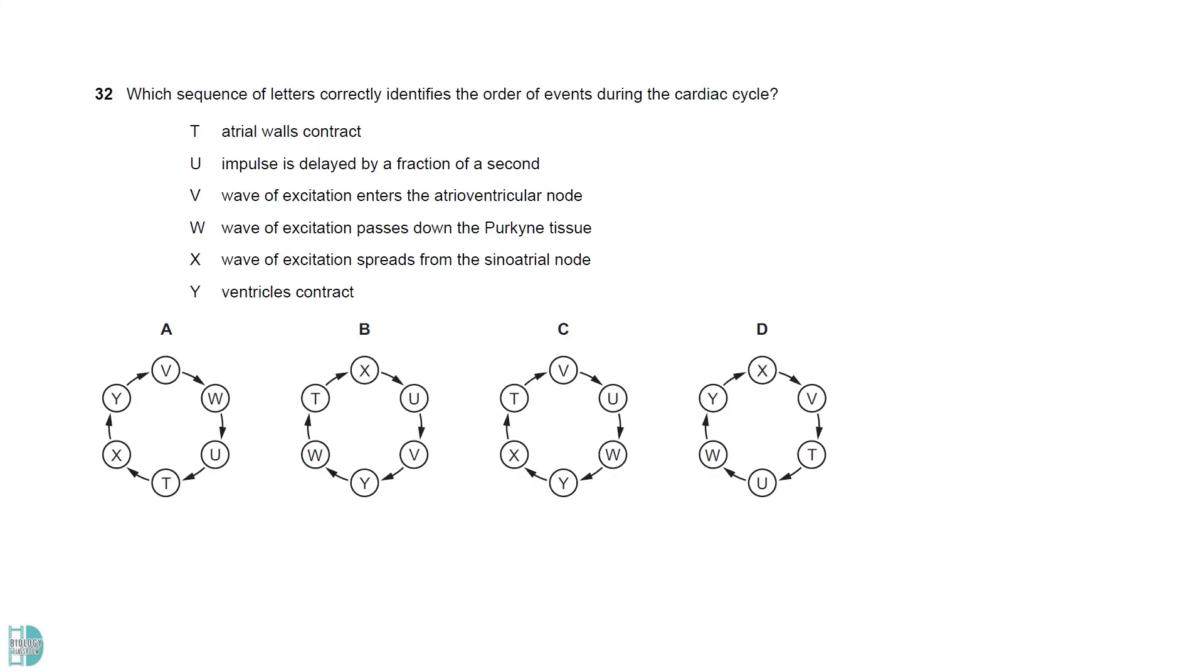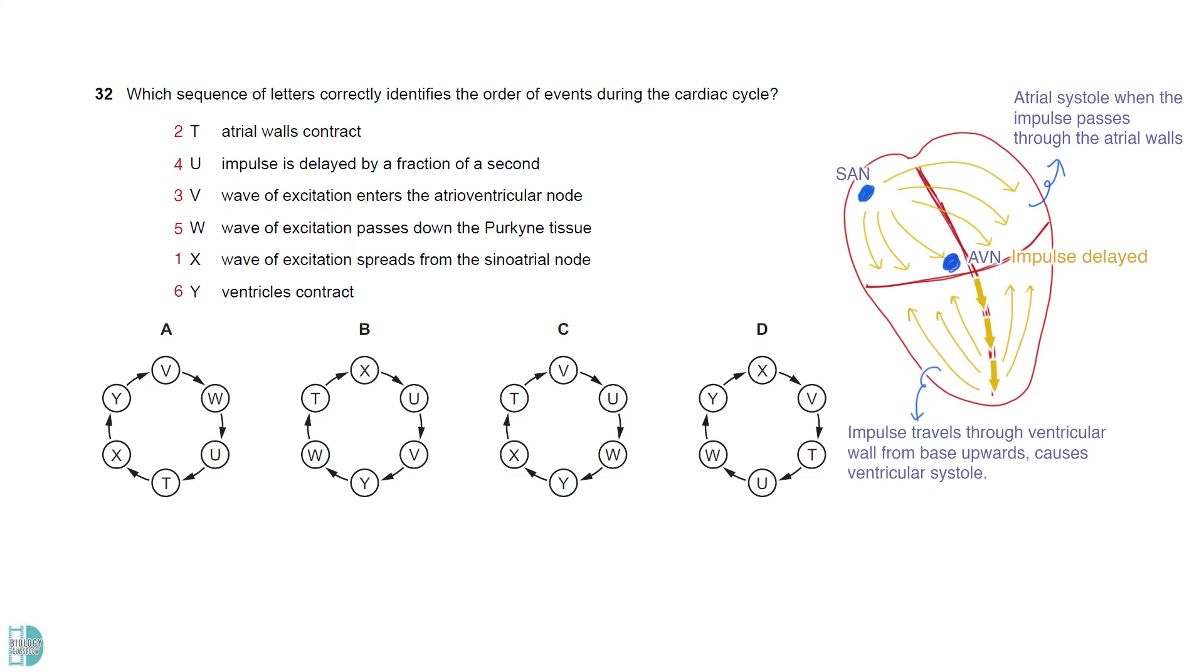The wave of excitation was generated by the SAN. It will then spread through atria, leading to atrial systole. Then AVN is stimulated. This delays the impulse. The impulse is then passed down the Purkinje tissue in the septum. It reaches the apex and then spreads in the ventricular wall, causing ventricular systole.